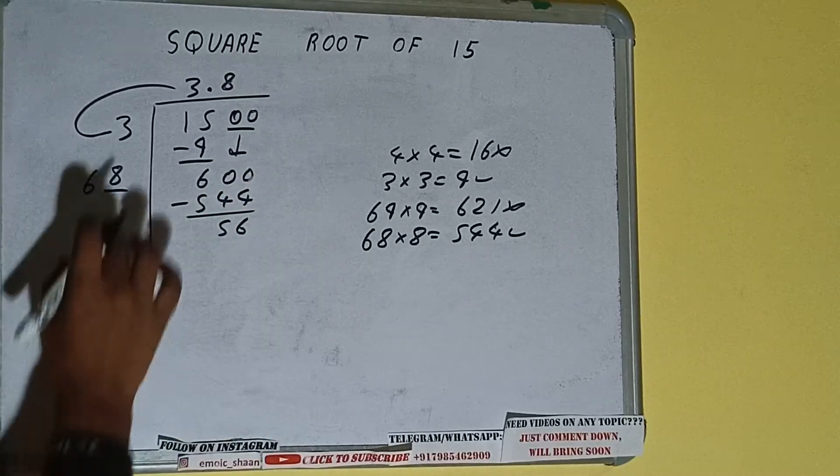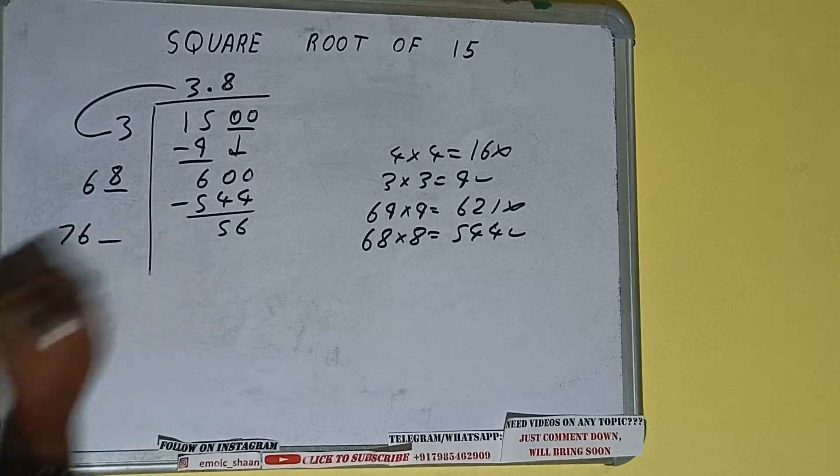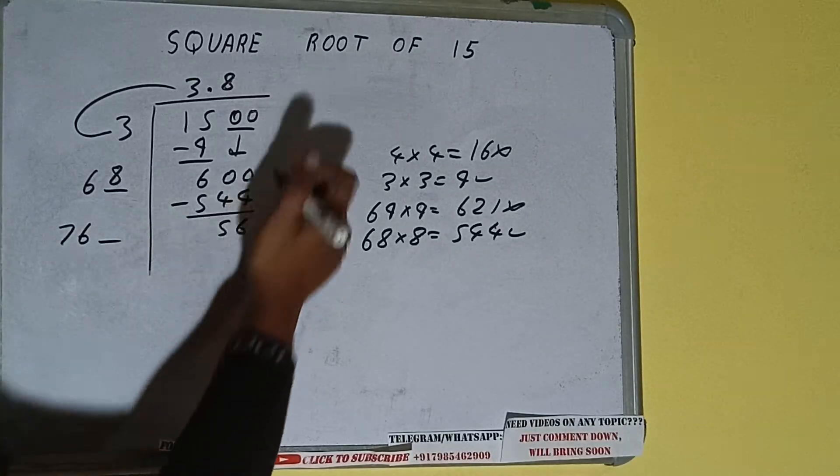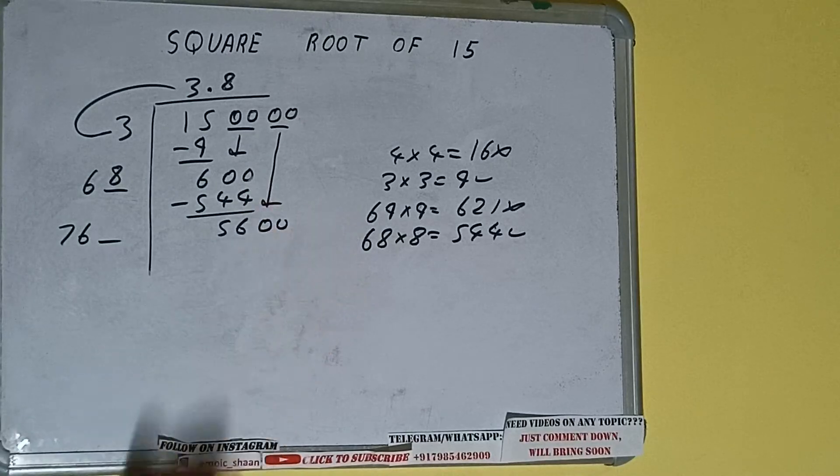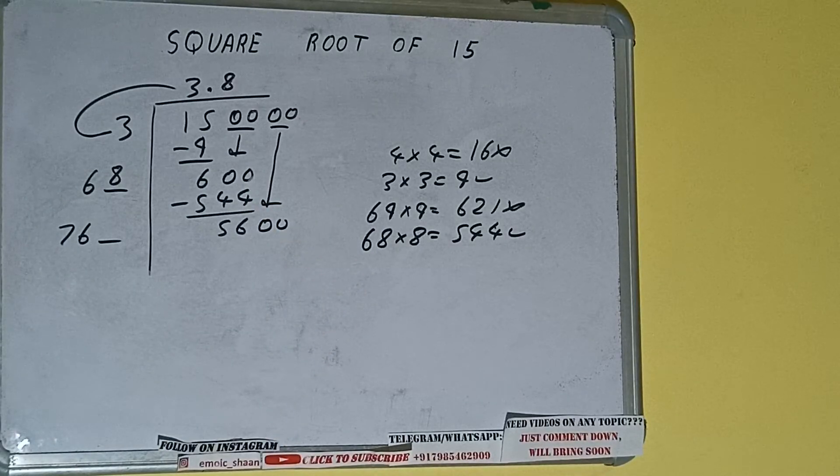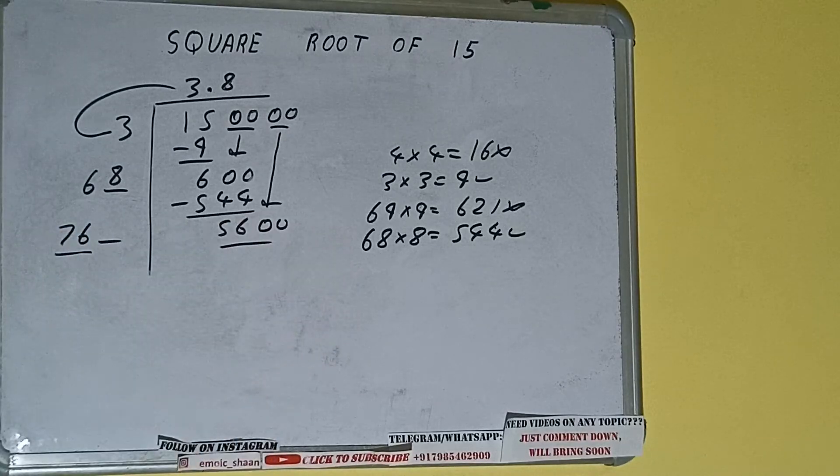So 8 here and 8 here, 544 subtract, and 56 will be left. Now 68 into 8, so add both. So 68 plus 8 will be 76 and 1 digit extra. And this number we need to make it big, so bring the next pair of zeros down and it will be 5600.